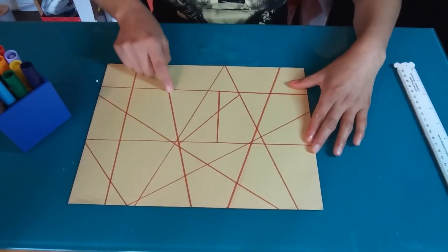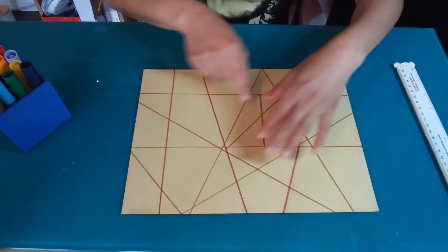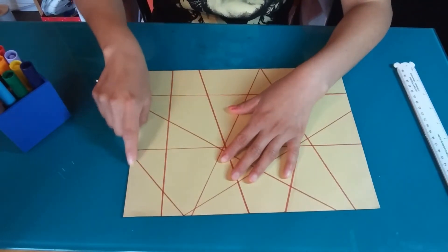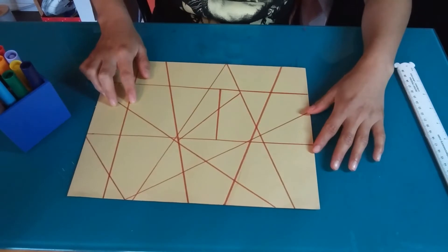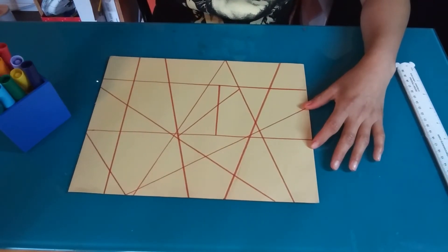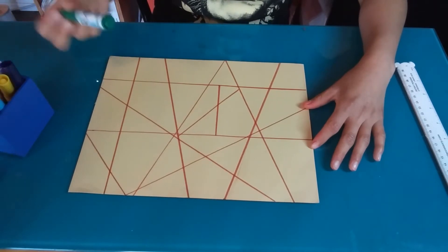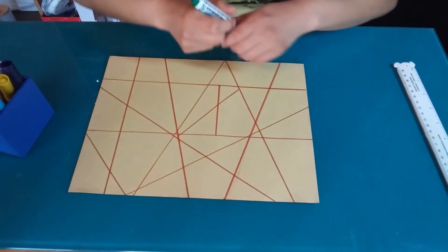Right here I see some triangles. And over here I see some rectangles. So just color in different colors to make your art look colorful and beautiful.